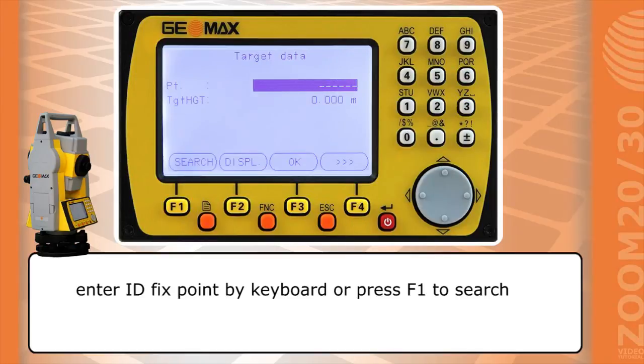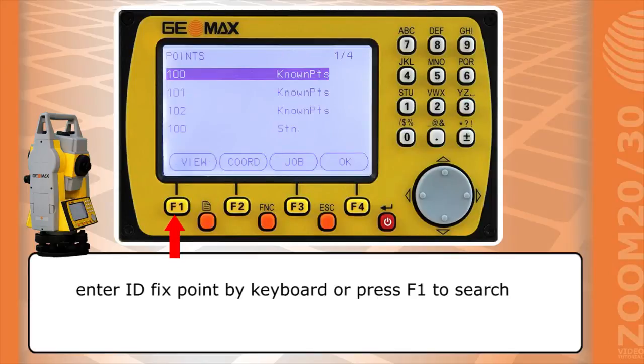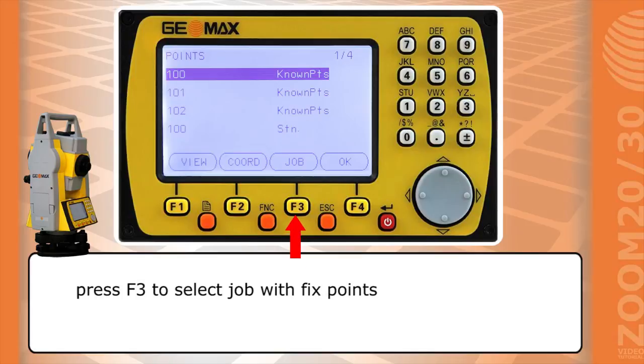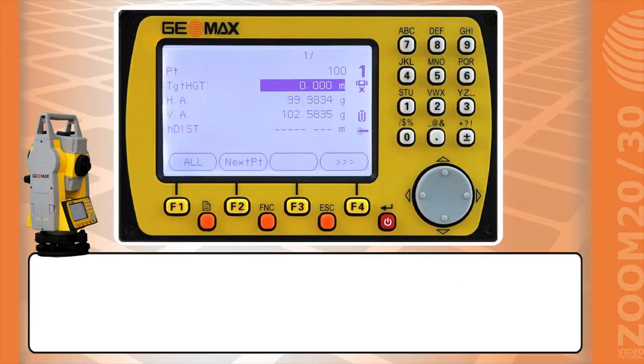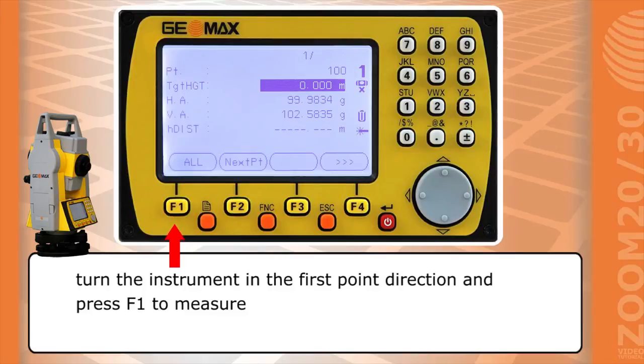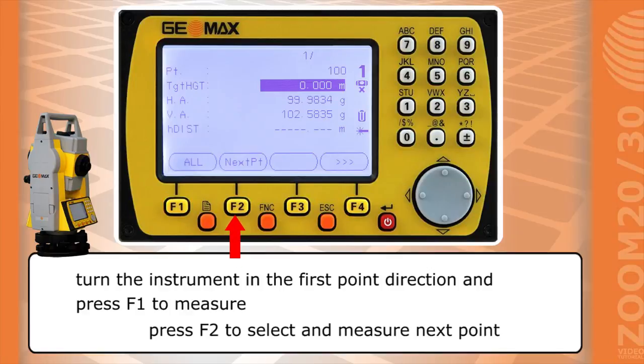Enter ID fix point by keyboard or press F1 to search. Press F3 to select job with fixed points. By navigation key select first point to measure. Then press F4. Turn the instrument in the third point direction and press F1 to measure. Press F2 to select and measure next point.